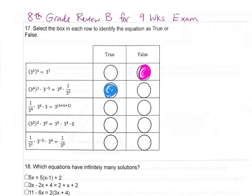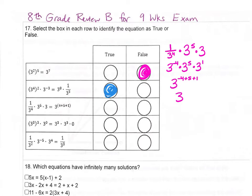For our next problem, we have 1 over 3 to the 4th power times 3 to the 5th power times 3 on the left side. That's like 3 to the negative 4th power times 3 to the 5th times 3 to the 1st power. When we multiply like bases, we keep the base and add the exponents, which gives 3 to the 2nd power. We want to see if that's equal to 3 raised to the 4 plus 5 plus 1 power. 4 plus 5 is 9 plus 1 is 10, and 3 squared is not equal to 3 to the 10th, so that one is false.